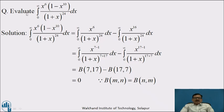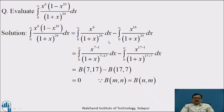Now we will see an example. Evaluate the integral: ∫₀^∞ x⁶(1 − x¹⁰) / (1 + x²⁴) dx. We can write this as ∫₀^∞ x⁶/(1+x²⁴) dx minus ∫₀^∞ x¹⁶/(1+x²⁴) dx. Both integrals are in the form ∫₀^∞ x^(m−1) / (1+x)^(m+n).